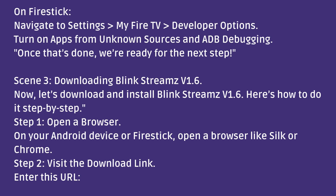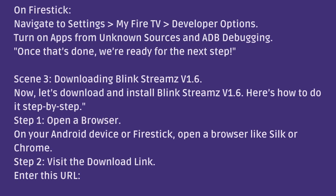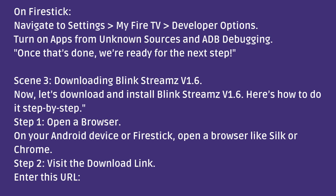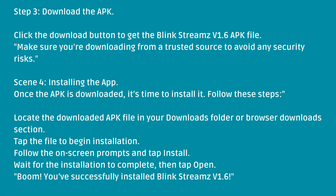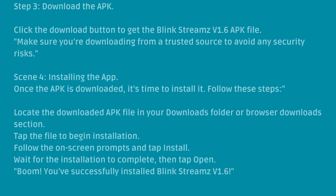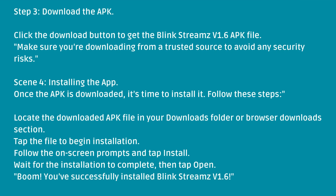Now let's download and install BlinkStreams V1.6. Here's how to do it step by step. Step 1: open a browser — on your Android device or Fire Stick, open a browser like Silk or Chrome. Step 2: visit the download link and enter the URL. Step 3: download the APK by clicking the download button to get the BlinkStreams V1.6 APK file. Make sure you're downloading from a trusted source to avoid any security risks.